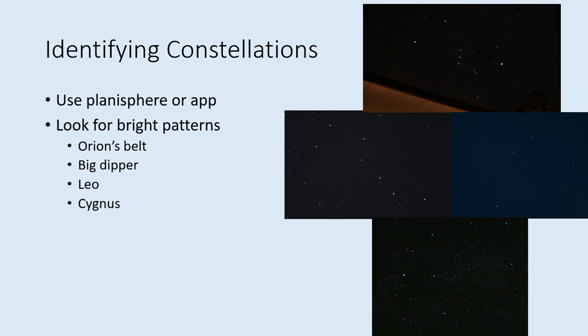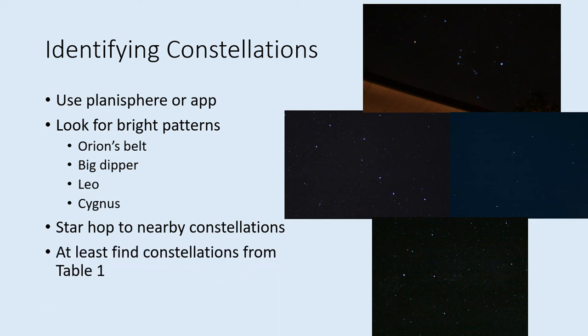Once you've found one of these constellations, use your app or planisphere to find others near it. This star-hopping technique often involves looking for alignments of stars in one constellation leading towards another, such as the way the stars in the bowl of the Big Dipper point towards the North Star in Ursa Minor. Depending on how dark your sky is, you may be able to pick out the patterns of several constellations, or just a few. Try to at least find the constellations you identified in Table 1 that would be up when you're observing.